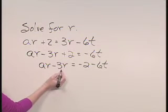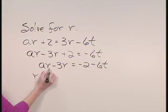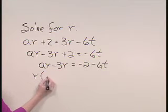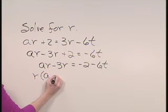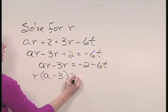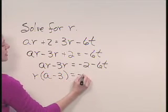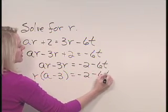On the left side, we can factor an R out of the two terms AR minus 3R, and that leaves us with A minus 3. R times A minus 3 is equal to negative 2 minus 6T.